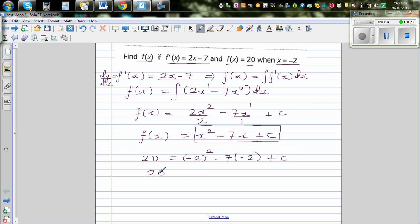So 20 is equal to 4 plus 14 plus c. This is where you have to be careful that you don't end up doing silly mistakes, so this is 18 plus c which implies c is 2.